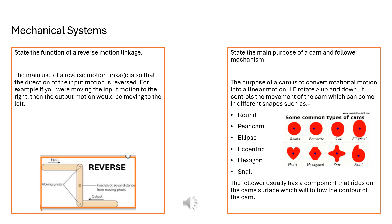Here are the answers to these two questions. State the function of a reverse motion linkage. The main use of a reverse motion linkage is so that the direction of the input motion is reversed. In this example you can see as the input goes forward to the right the output is going to the left and you can see where the pivots occur in that diagram.